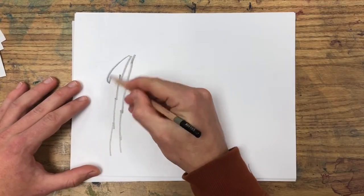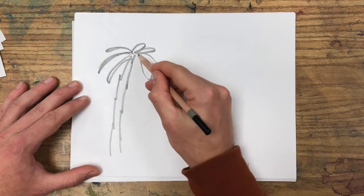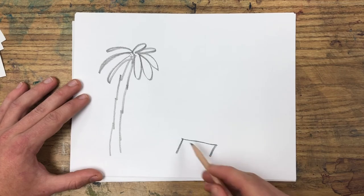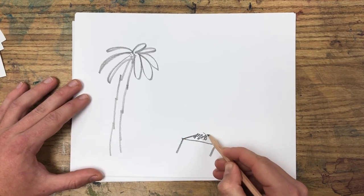For our final horizon line challenge, let's draw a beach scene. Start with one of the subjects that would be in the sand, like a palm tree, a pirate's treasure chest.